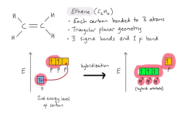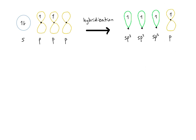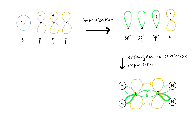Let's tie those pieces of information together to explain the structure of ethene by drawing the orbital diagram. After hybridization, I have three balloon-shaped hybrid orbitals and a p orbital with one electron. Arranging these around each carbon atom, the three hybrid orbitals sit in a triangular planar geometry. They form sigma bonds: one between each carbon and its hydrogens on both sides, and one between the two carbons in the middle.